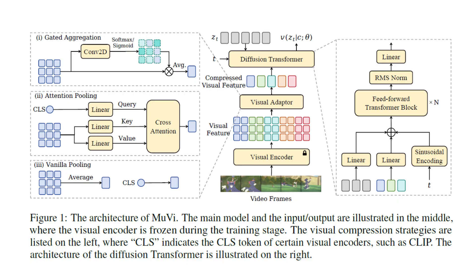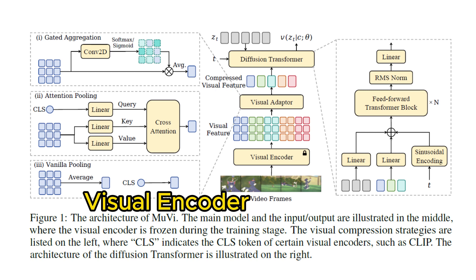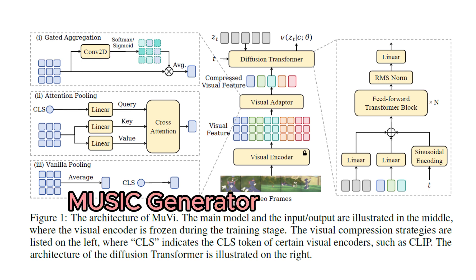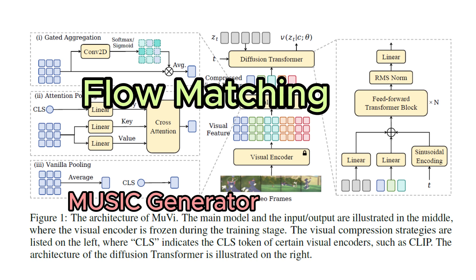MU-V uses a combination of powerful AI techniques. First is the visual encoder — the part of the model that watches the video and extracts key information about what is happening. Next is the visual adapter, which compresses the visual information and aligns it with the music generation process. Finally, the music generator creates the music using a technique called flow matching to ensure high quality and diversity.